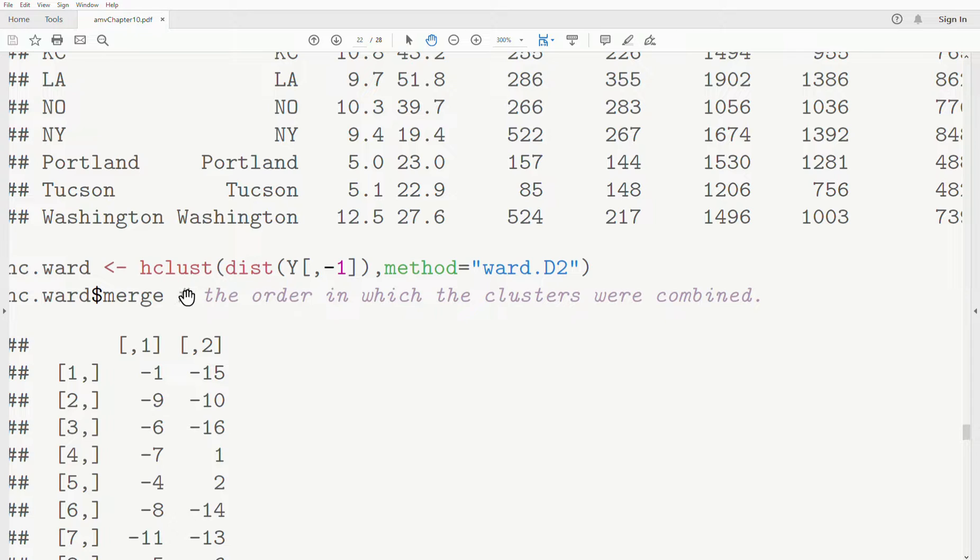So hclust, hierarchical clustering, is the function in R that does this. And you have to pass it a distance matrix.